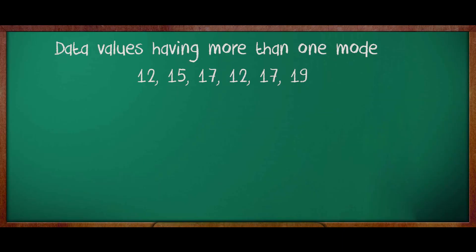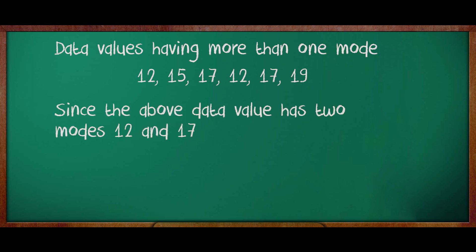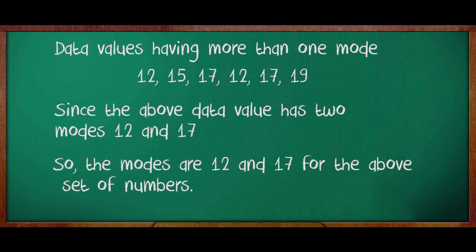Now, what about data values having more than one mode? Sometimes you will have one mode, sometimes you will have two modes. For example, the numbers in the set of data are 12, 15, 17, 12, 17, 19. Since the above data value has two modes — 12 and 17 — the modes are 12 and 17 for the above set of numbers. This is how we find the mode for the set of data.